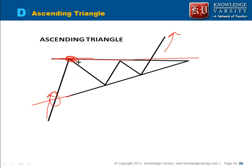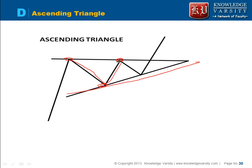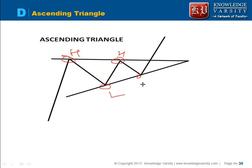The price hits the resistance line and comes back, which then acts as a support line. It goes to the resistance line, comes back to the support line. What is happening is the highs are lower — lower highs — and the lows are higher. Once it breaches this triangle, the trend will continue.